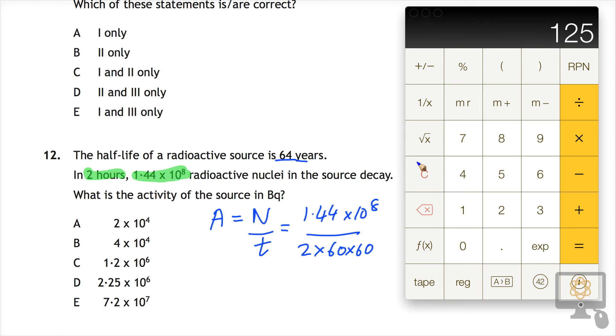So we can enter all of that into the calculator now. Let's see if we can do that here. So what we've got is 1.44 times 10 to the power of 8 divided by, and I'll just put in brackets,